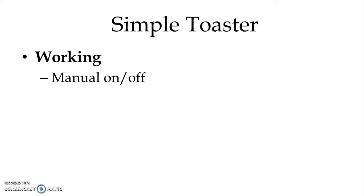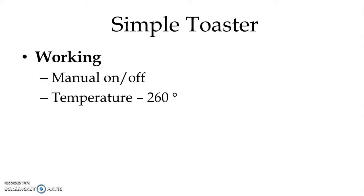In case of a simple toaster, we have to manually switch on and switch off. Once the sufficient temperature is obtained, we can manually switch off the toaster. The temperature range is 260 degrees.